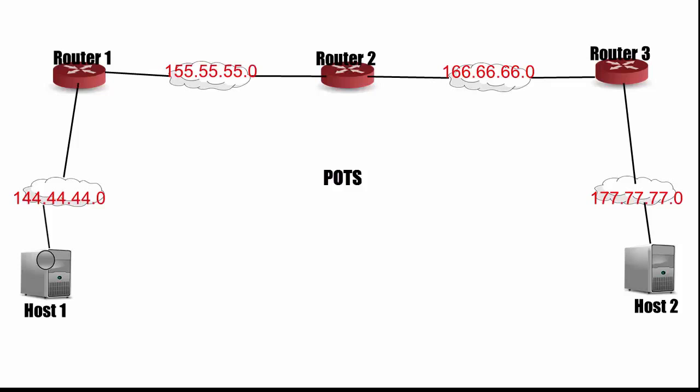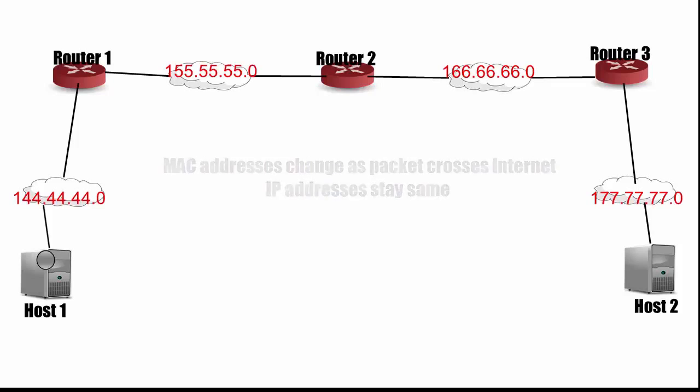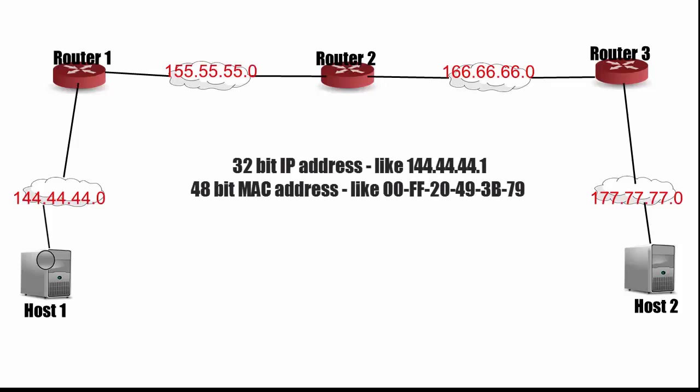One thing to notice as we go through the video is that the MAC addresses change as they cross the internet, but IP addresses stay the same. Note that you have 32-bit IP addresses, which are at layer 3, or 48-bit MAC addresses, which are at layer 2.